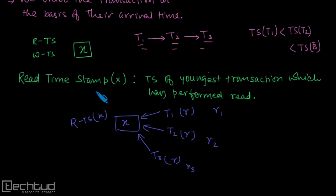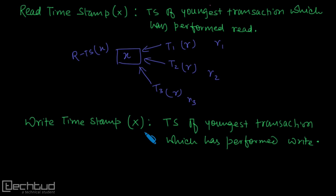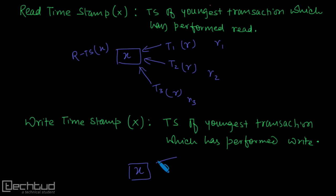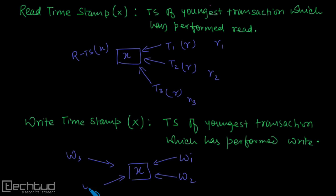Now let us understand the write timestamp. Similarly, the write timestamp is also the timestamp of the youngest transaction which has performed a write on database item X. For example, consider write operations on X by transactions 1, 2, 3, and 4.